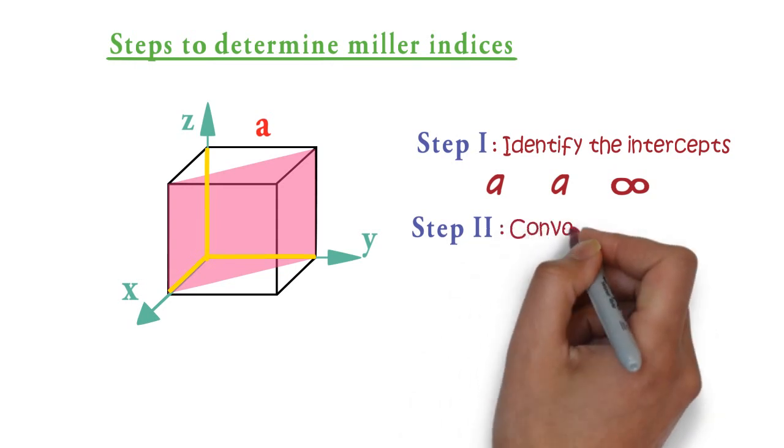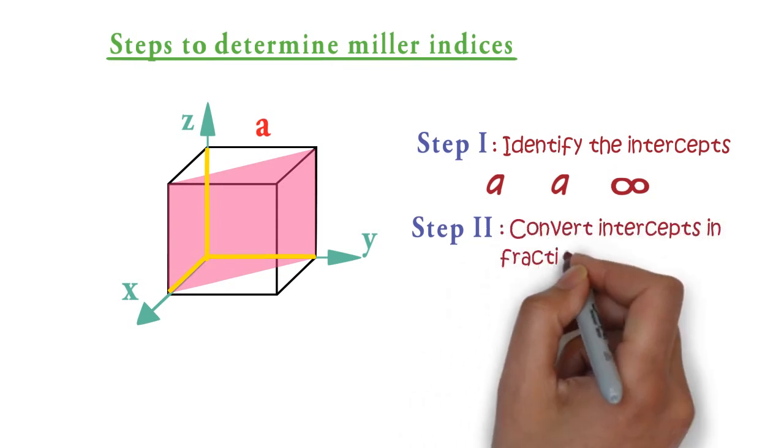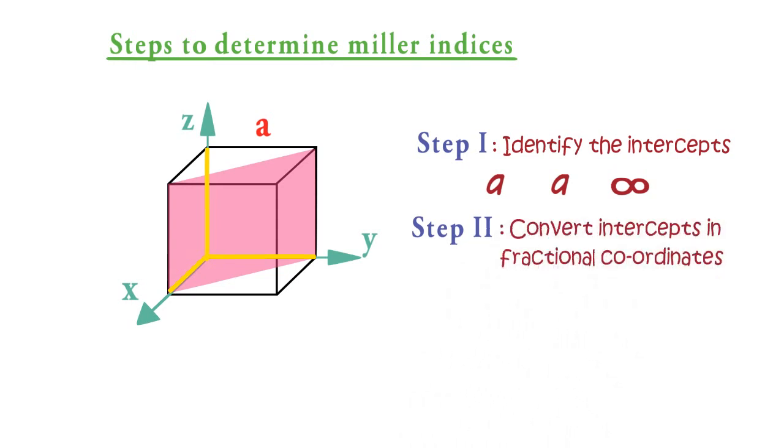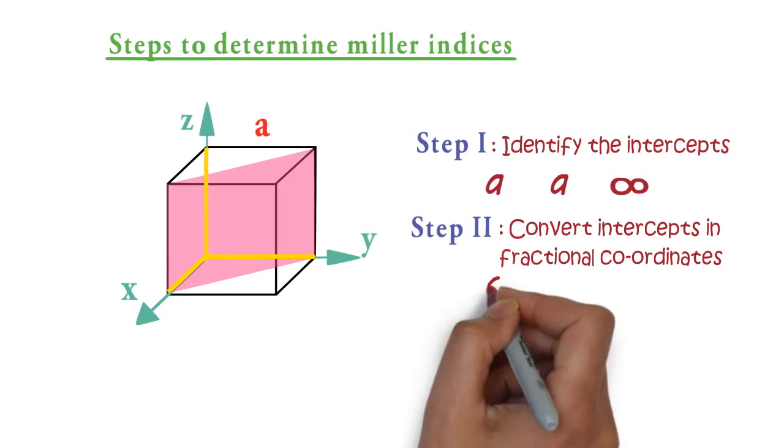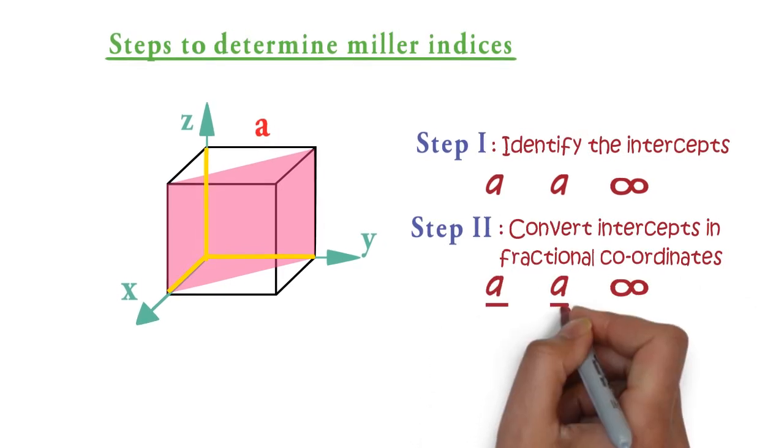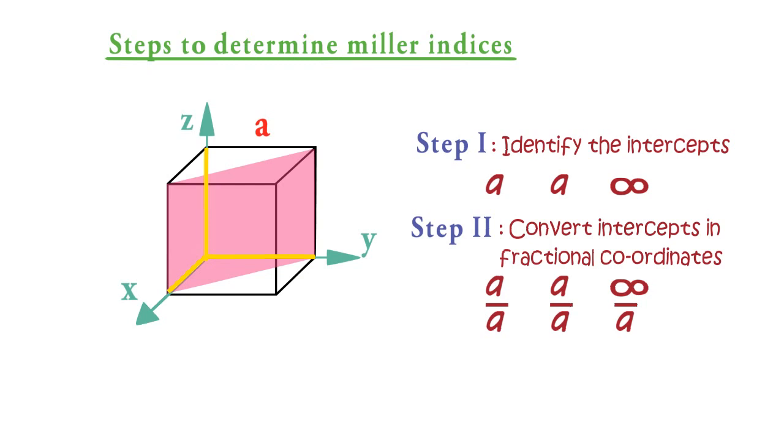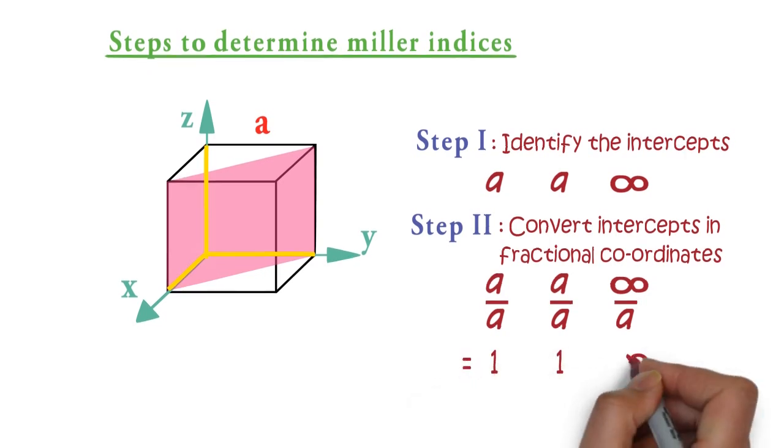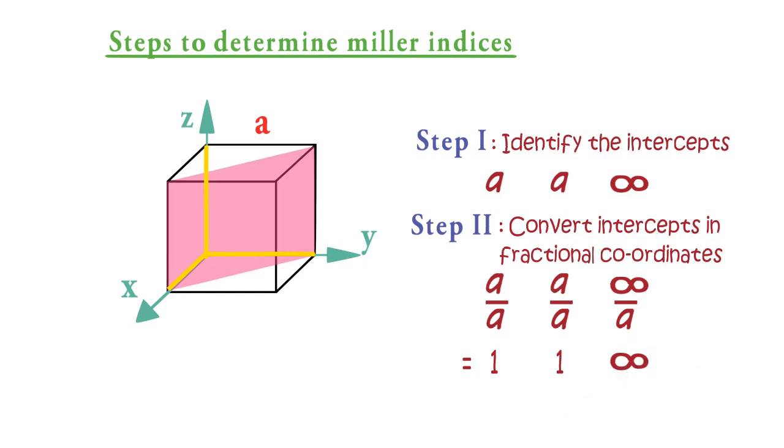In step 2, convert these intercepts into fractional coordinates. Fractional coordinates is nothing but the ratio of the intercept and the edge length in the corresponding direction. So here we can get fractional coordinates as 1, 1, and infinity.